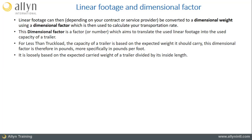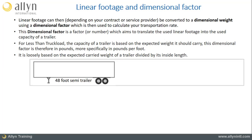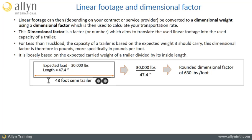The dimensional factor is loosely based on the expected carried weight of the trailer divided by its inside length. For example, if your service provider generally uses a 48-foot semi-trailer and expects a load of about 30,000 pounds, the inside length is in fact 47.4 feet. Therefore, to calculate the dimensional factor, your service provider would take the expected load of 30,000 pounds, divide it by the inside length of 47.4, and then generally round the number. Based on these numbers, you could expect a dimensional factor of 630 pounds per foot.